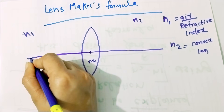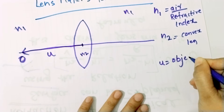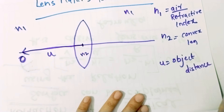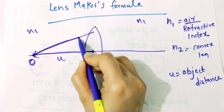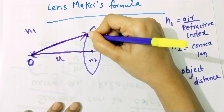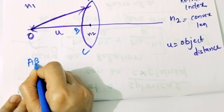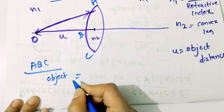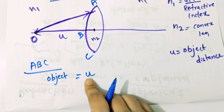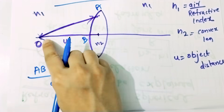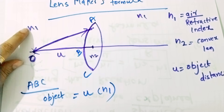In the center of this lens there is an object. There is an object placed on the principal axis at some distance. We label the object points A, B, C. It is a distance between the center and the object. The light from the object travels through the medium with refractive index N1 and arrives at the lens surface.